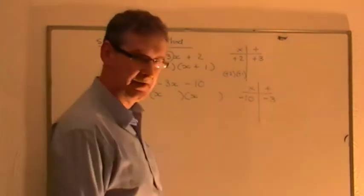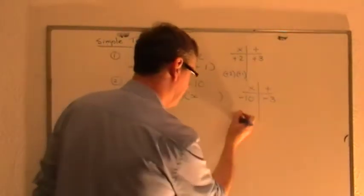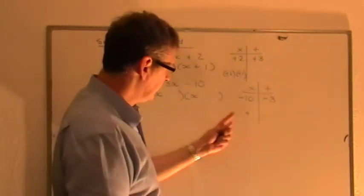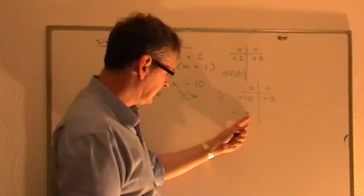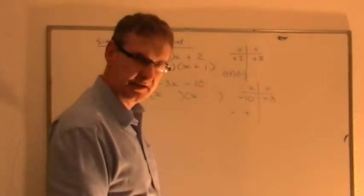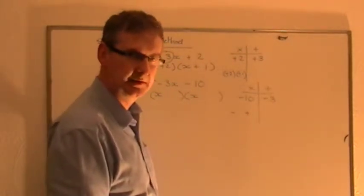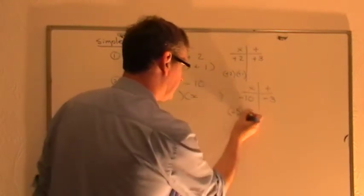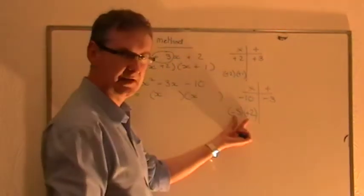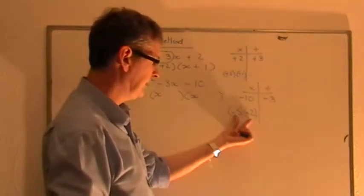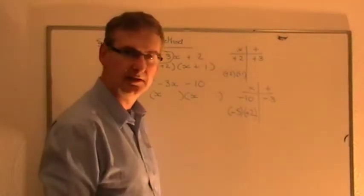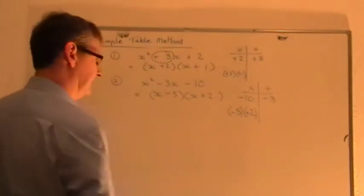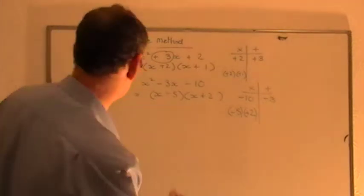Two numbers that multiply to give minus ten. One must be minus, one must be plus. Got to be. You're going to use the army method, adding them together to give an answer of minus three. The minuses must win by three. So I would suggest a five and a two would be the two numbers we need to be thinking about. They multiply together to give minus ten. Army method: add them together, give minus three. Simple as that. So minus five, plus two, or the other way around. Doesn't matter. End of question.